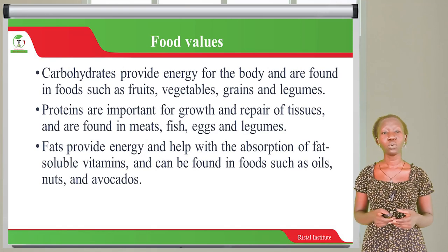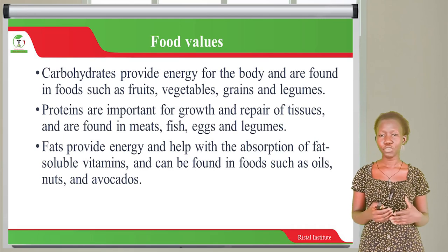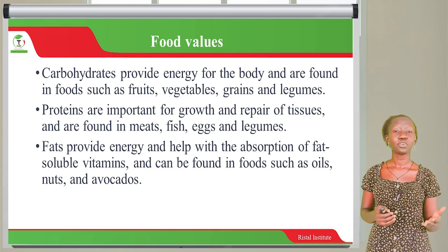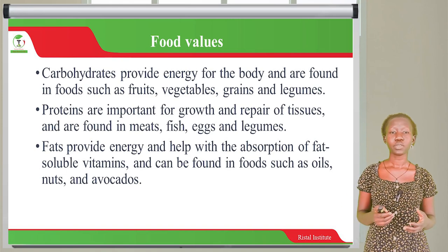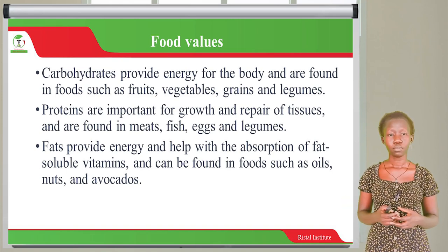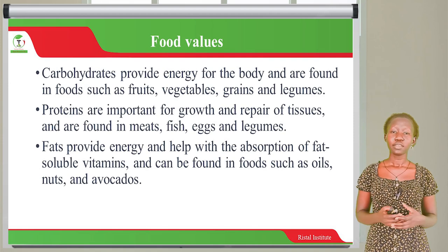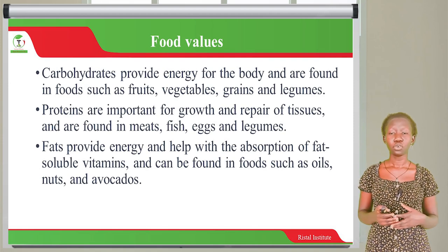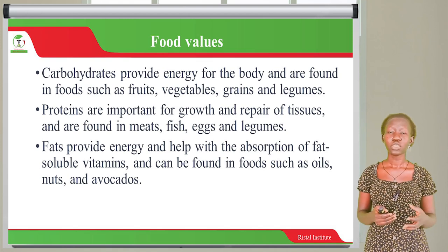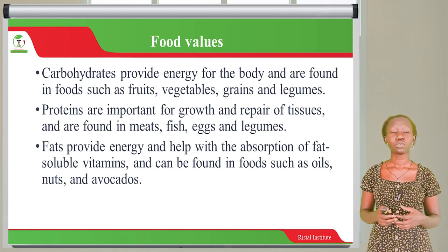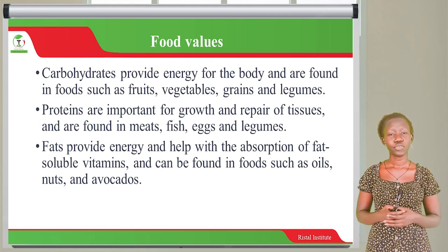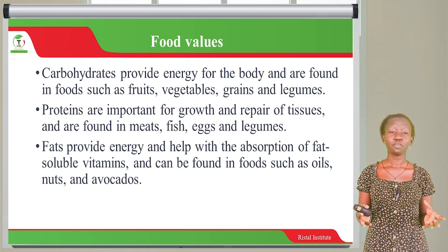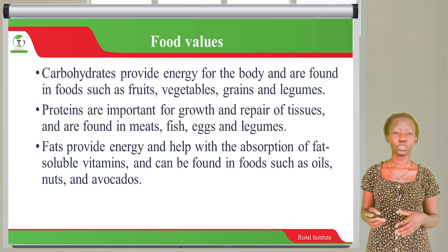For example, carbohydrates provide energy for the body and are found in foods such as fruits, vegetables, grains and legumes in different proportions. Proteins are also very important for growth and repair of tissues and are found in meats, fish, eggs and legumes. Both plant proteins and animal proteins provide nutrients in different proportions.